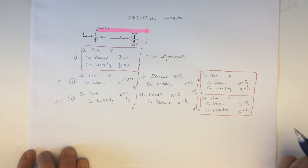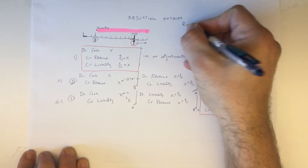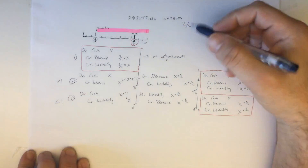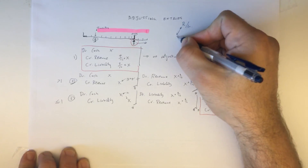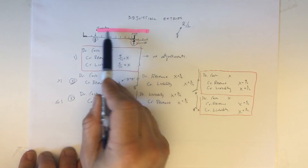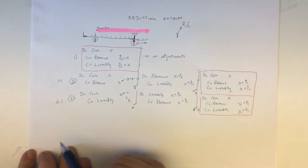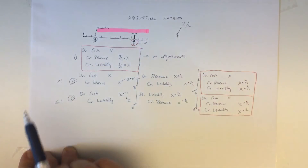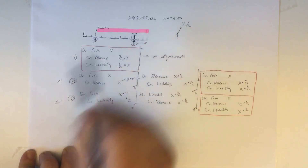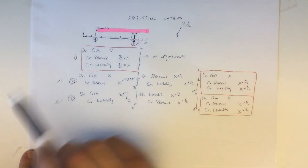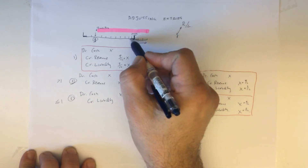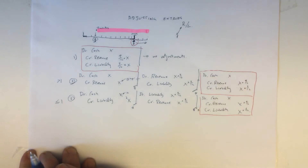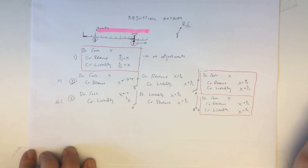You need adjusting entries when revenue doesn't happen at the same time as the cash flow. Most of the revenue in this example was earned in the same financial period the cash came in — nine months is revenue for this period — but the remaining three months is a liability, because it will only become revenue in the future. That's a brief introduction to adjusting entries using a revenue-received-in-advance example.